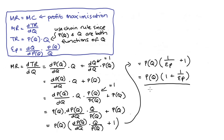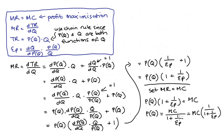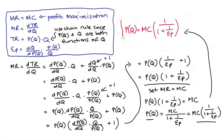Now that we have this condition, we can bring in our optimal pricing condition that marginal revenue is equal to marginal cost. Substituting our expression for marginal revenue, we get price times one plus one over epsilon P equals marginal cost. We can divide both sides by one plus one over epsilon P, so we get price equals marginal cost divided by one plus one over epsilon P, which we can rewrite as marginal cost multiplied by one divided by one plus one over epsilon P. This is our condition — the optimal price as a function of marginal cost and the price elasticity of demand.